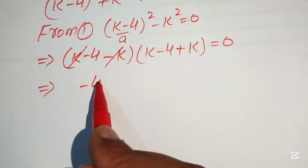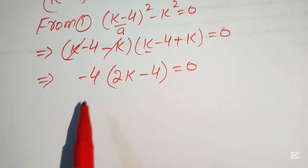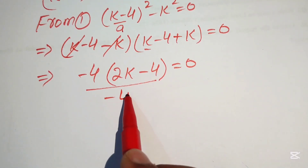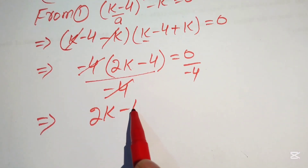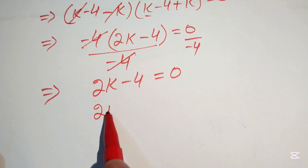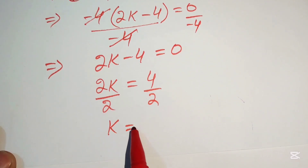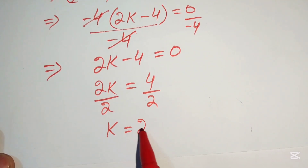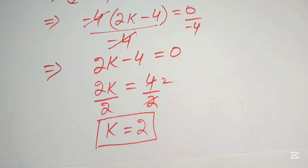The k terms cancel, giving (−4)(2k − 4) = 0. Dividing both sides by −4, we get 2k − 4 = 0, so 2k = 4. Dividing by 2, the first value is k = 2. This is the first real solution.